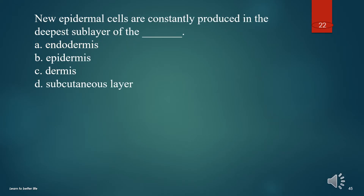New epidermal cells are constantly produced in the deepest sublayer of the what? A. Endodermis. B. Epidermis. C. Dermis. D. Subcutaneous layer. The answer is B. Epidermis.